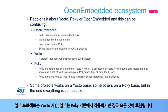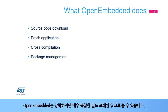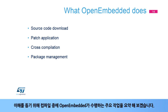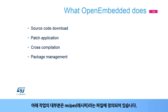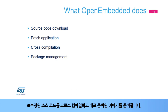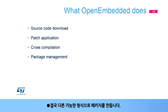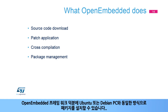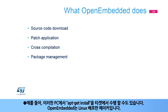Some projects work on a Yocto base, some others on a Poky base, but in the end everything is compatible. OpenEmbedded may be seen as a powerful yet quite complex build framework. To ease its understanding, the main actions OpenEmbedded does during compilation are: it downloads source code from various repositories; it applies patches to the source code; it cross-compiles this modified source code and prepares ready-to-deploy images; and it creates packages under different possible formats. Thanks to the OpenEmbedded framework, these packages can be installed exactly the same way on an Ubuntu or Debian PC — for example, an apt-get install on such a PC could also be done on the target.